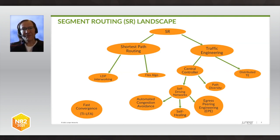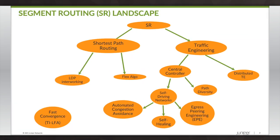Segment routing has been around for about eight years now in terms of IETF drafts, and it's been deployed in many networks worldwide. Looking at the main branches of this layout, one branch on the right-hand side is traffic engineering. People can do segment routing traffic engineering using distributed TE, but nowadays people increasingly are using central controllers, lending itself to self-driving networks — automated congestion avoidance, automated self-healing, and automated egress peering engineering. The other branch on the left-hand side is shortest path routing, and people often use SR as a vehicle for migrating away from LDP. An aspect of shortest path routing is Flex-algo, which we'll be talking about a lot during this session.